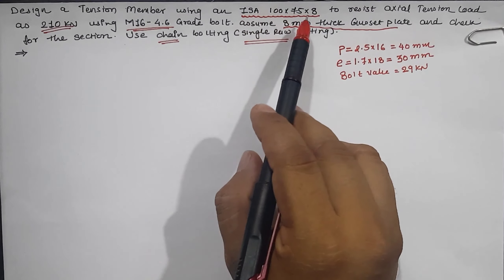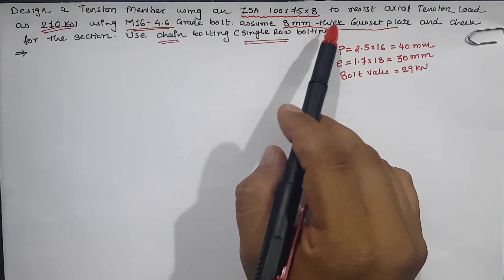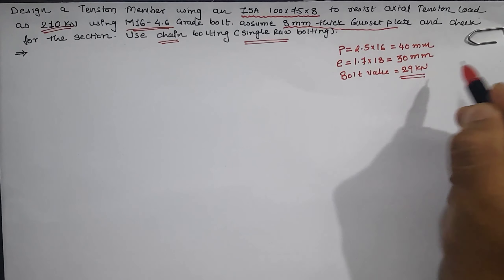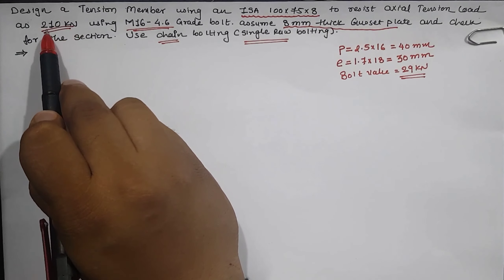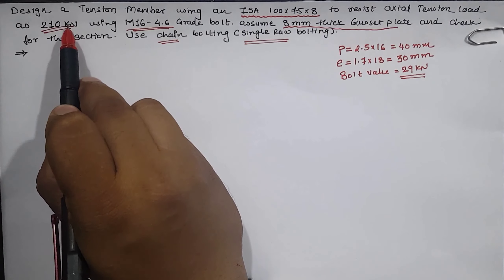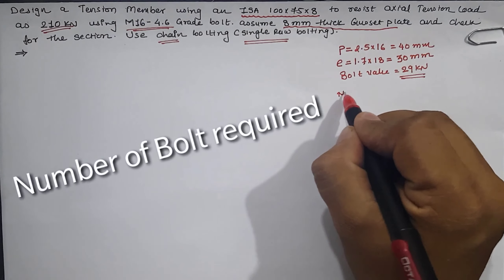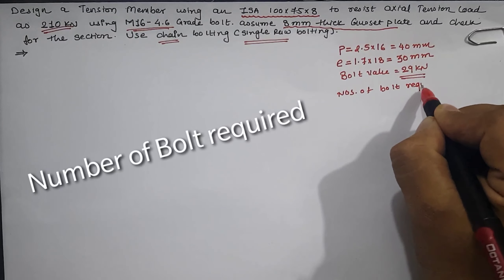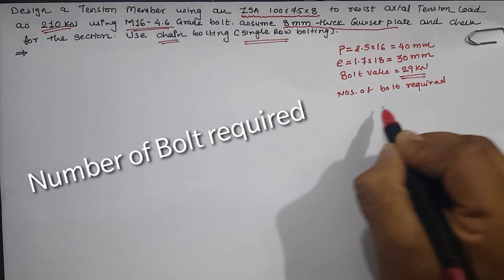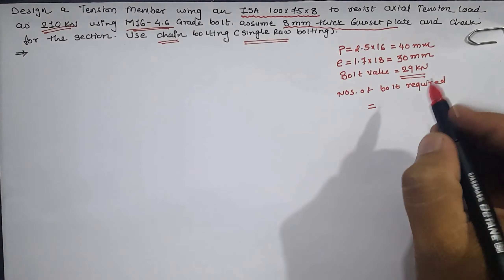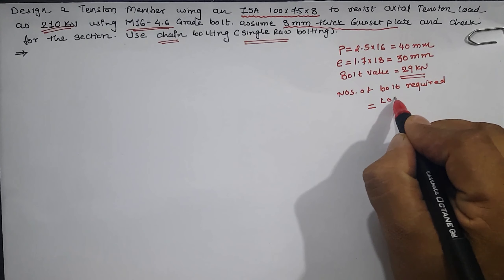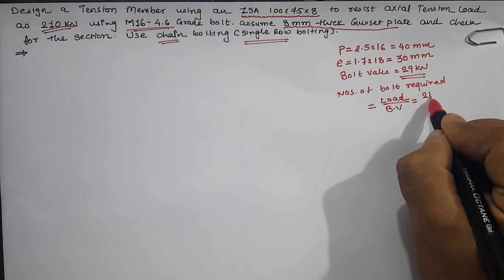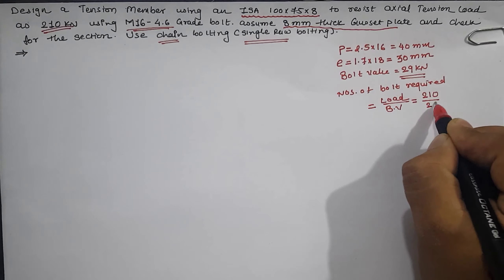We are going to use ISA 100×75×8 with a gusset plate of 8 mm thick. Since it is a lap connection, we can use 29 kN as the bolt value. We have been given 210 kN as the design load, so the number of bolts required per joint to resist the 210 kN load is the load divided by the bolt value: 210 divided by 29.